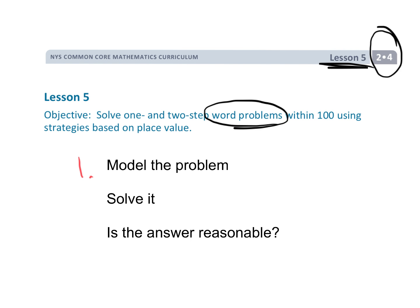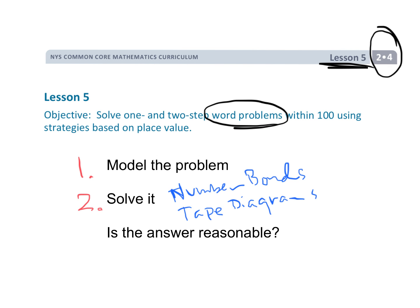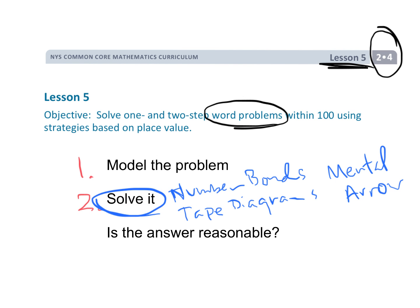Step one is to use tape diagrams to model the problem. Step two is to solve it — students can use number bonds, tape diagrams, mental math, or the arrow method. At this point they're not guessing; they've modeled the problem and know exactly what to do. Step three is to stop and look back: is our answer reasonable? We'll use estimation for that.